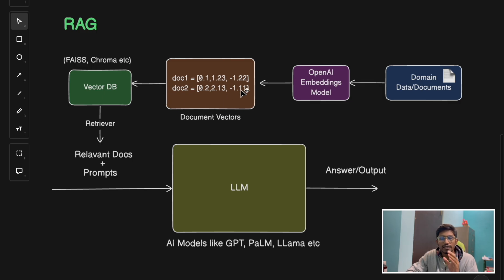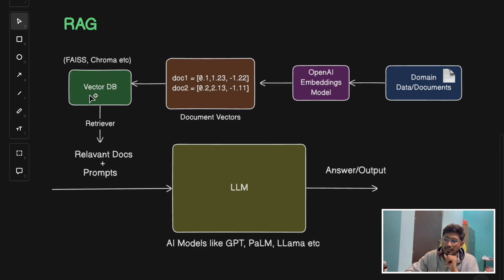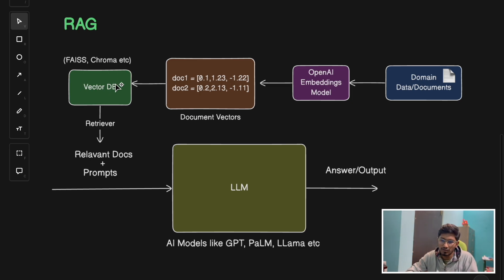Using your embedding model, we'll convert these documents to vectors. These document vectors will be stored in a vector database. For example, FAISS, which is created by Facebook - it's an in-memory vector database, frequently used for caching, POC, or testing LLM workflows. But in production, you'll use a production-grade vector database like Chroma. There are other databases also. So the information is encoded in vector form - basically a series of numbers, a point in a huge n-dimensional space.